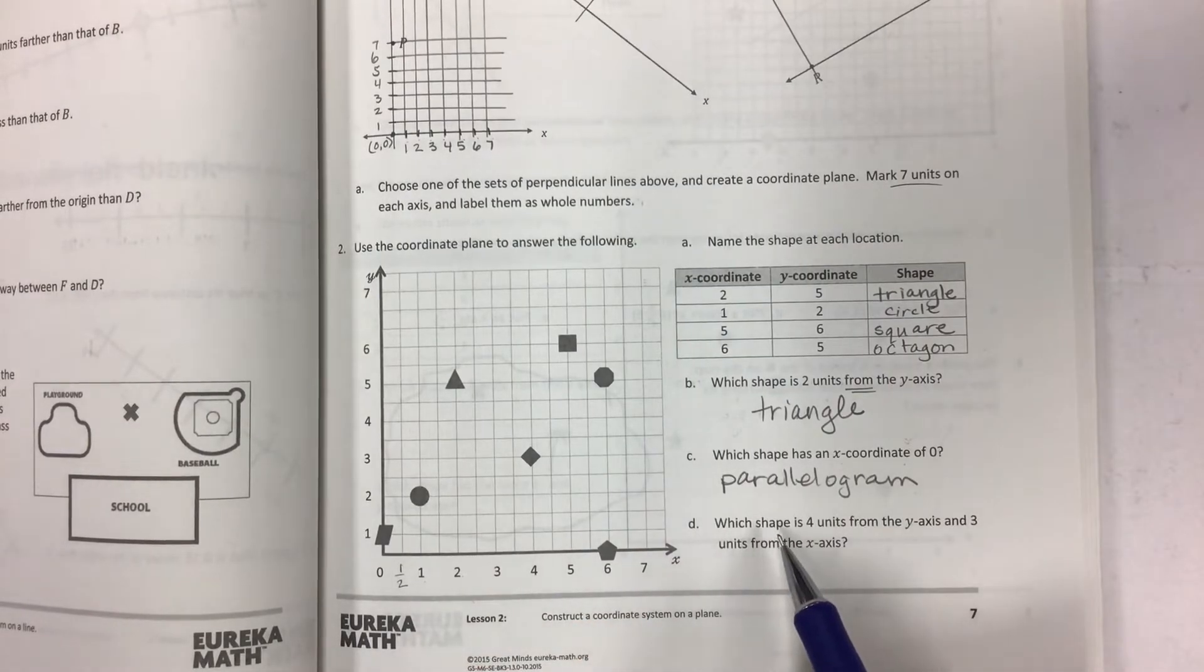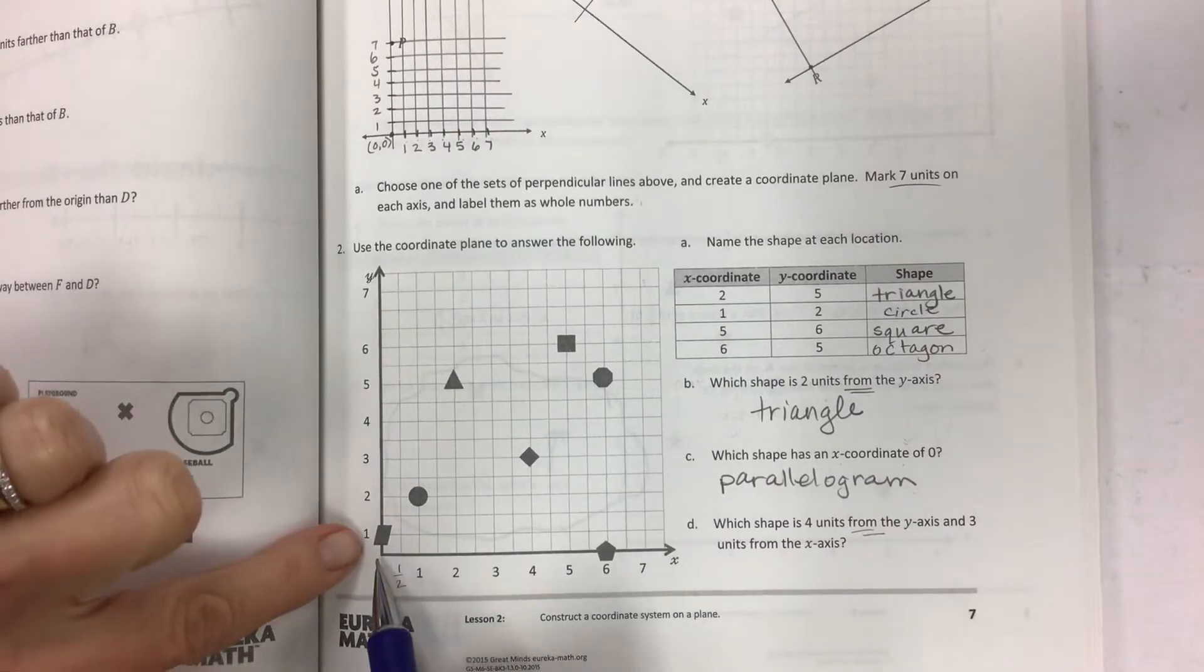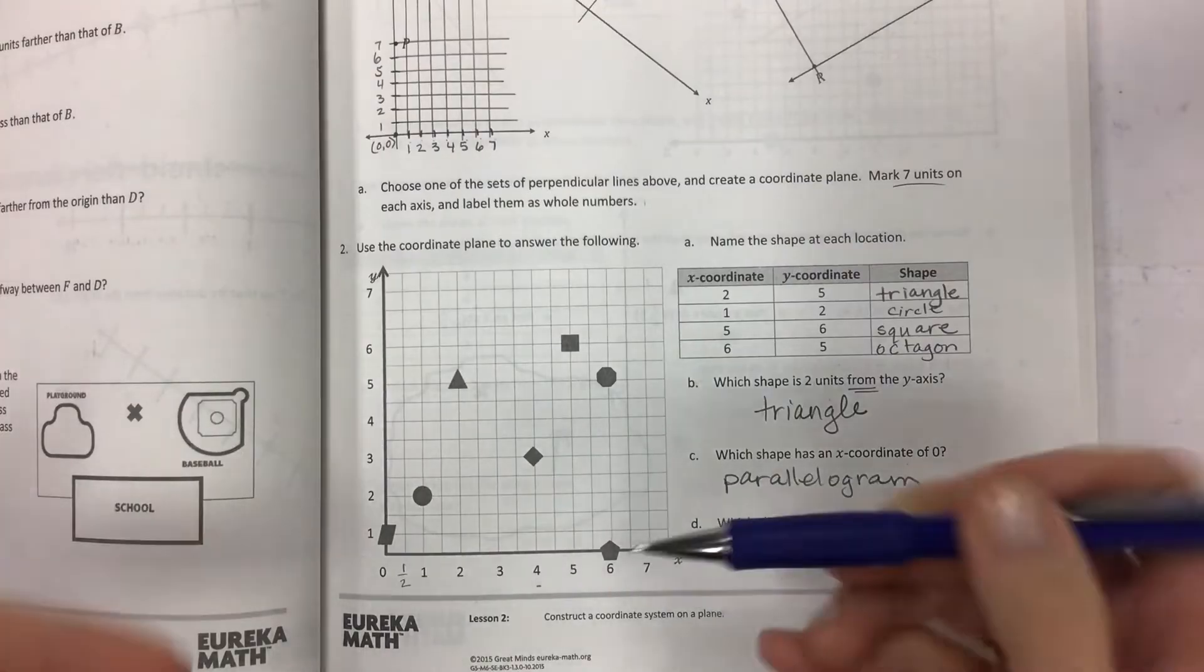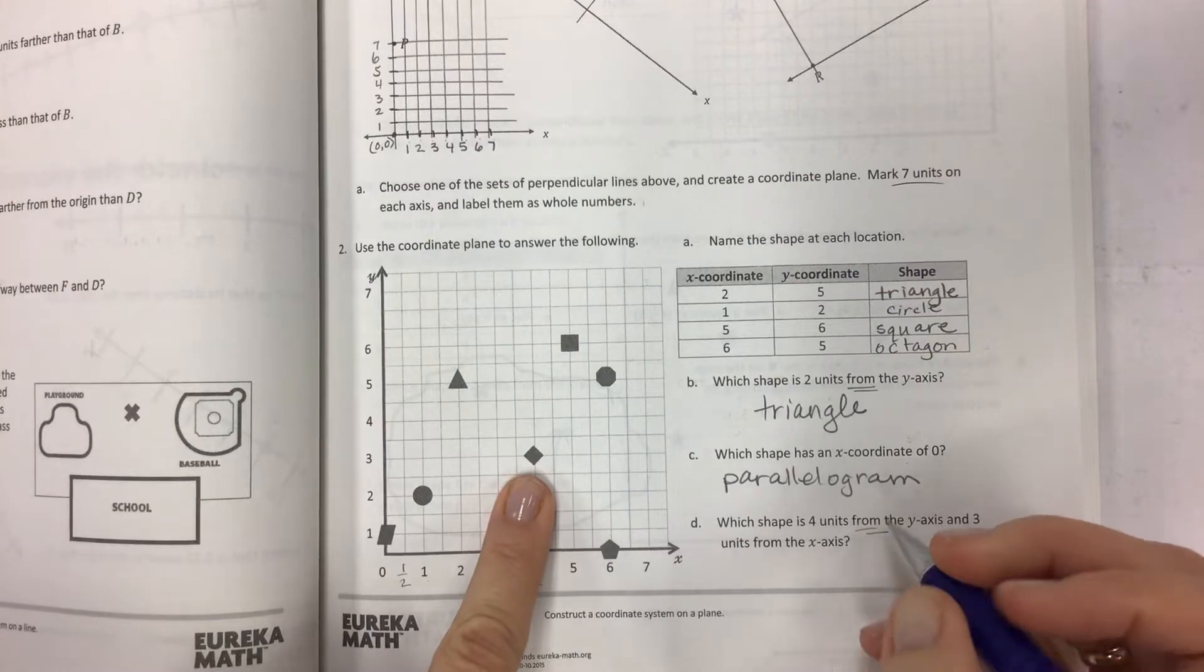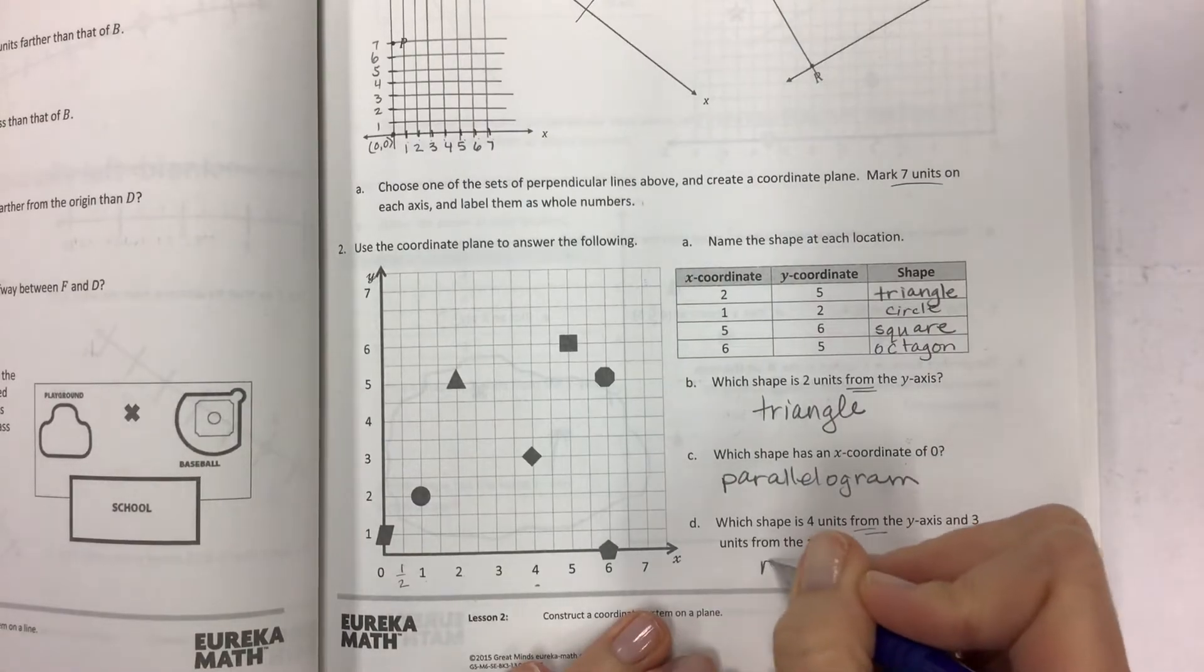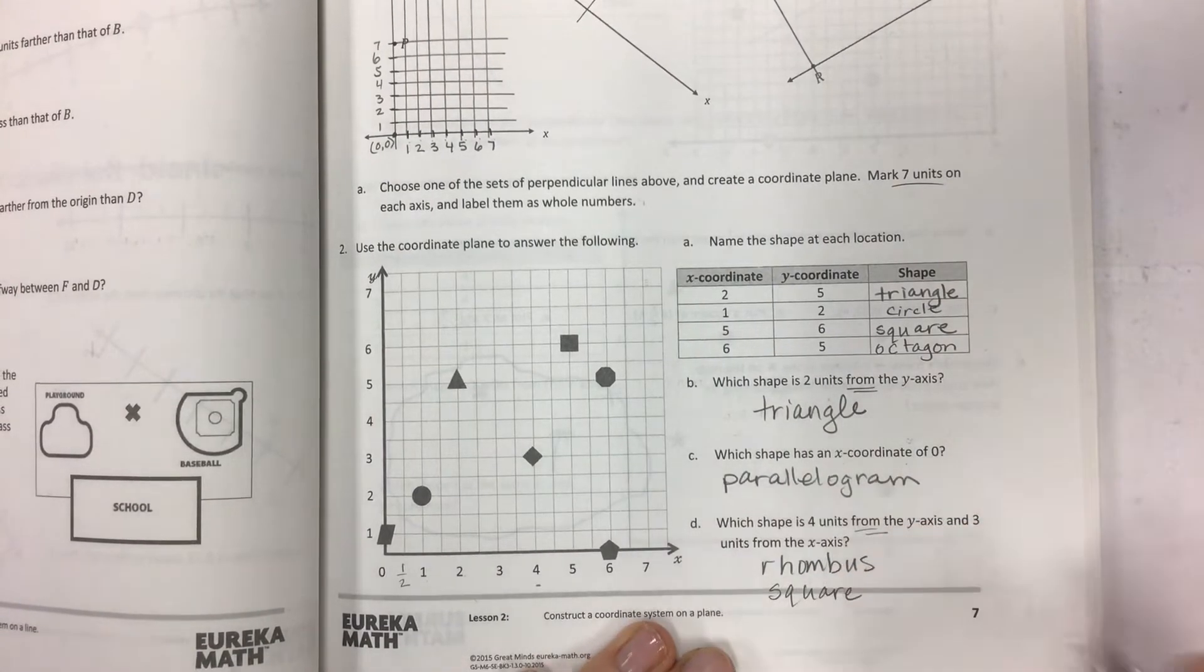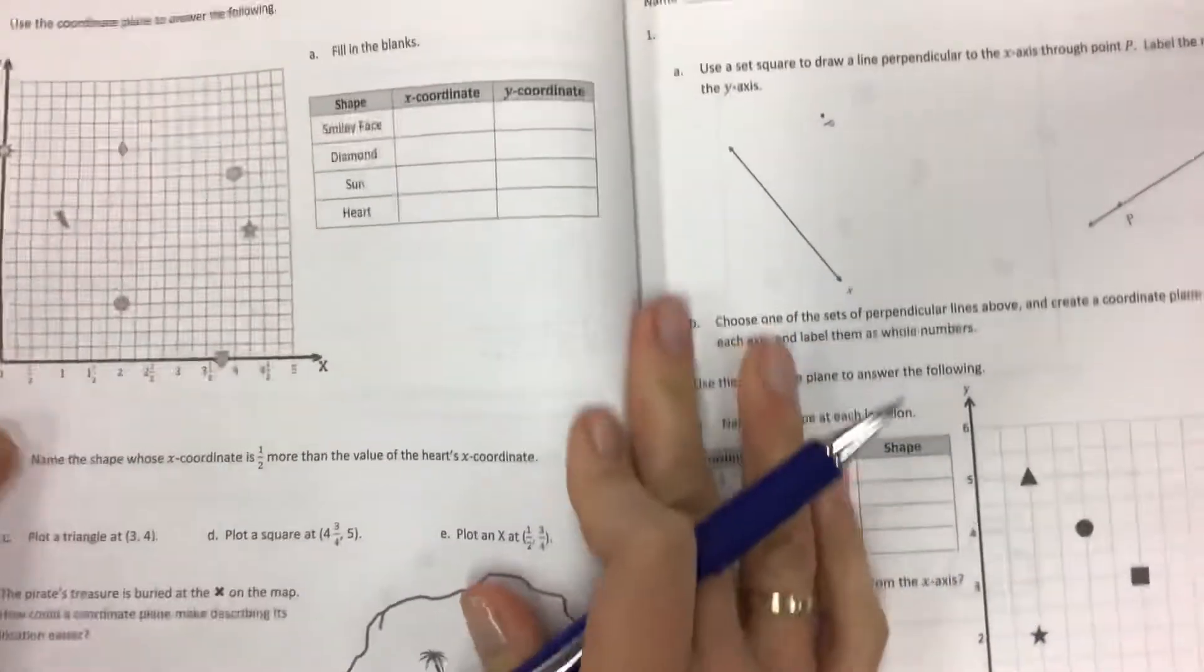And then for D, which shape is four units from the y-axis? So it's going to be four units for the x value because it's four units away from the y and three units from x. And so this is going to be the whatever you want to call it. You can call it a square or a rhombus or I wouldn't say diamond anymore. I would say rhombus. And you can also say square if you want. It seems to be all sides equal.